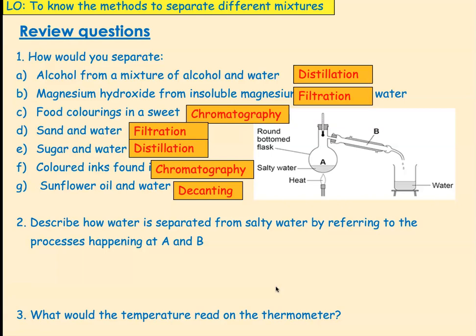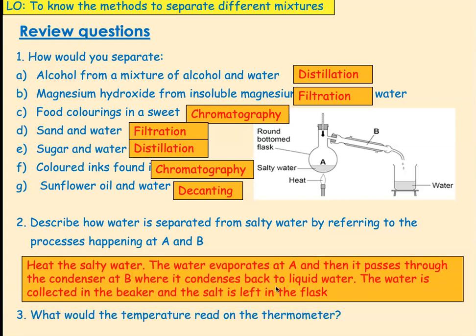Okay, pause the video again. We're going to describe how water is separated from salty water by referring to the processes happening at A and B. Okay, right, so we heat the water. The water evaporates at A, passes through the condenser where it condenses back to liquid water, and then the water is collected in the flask.